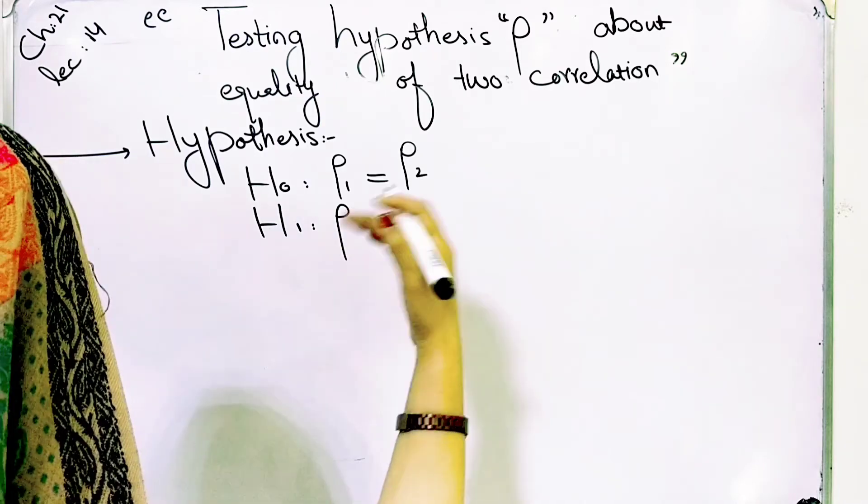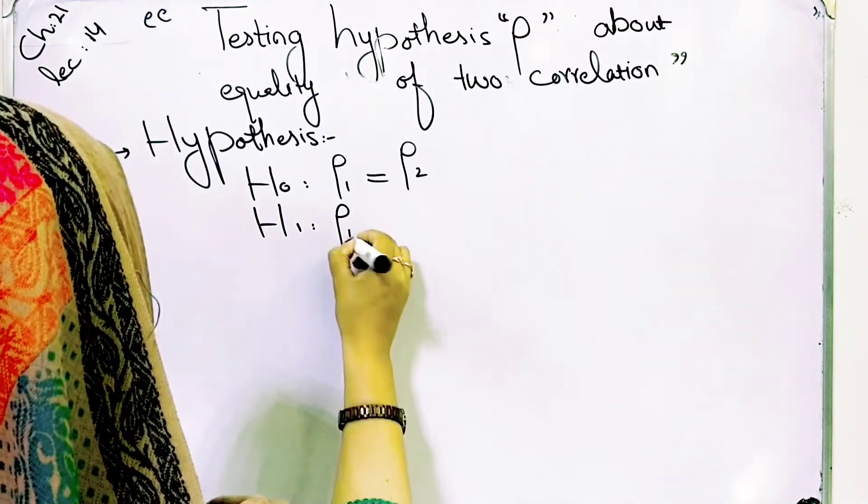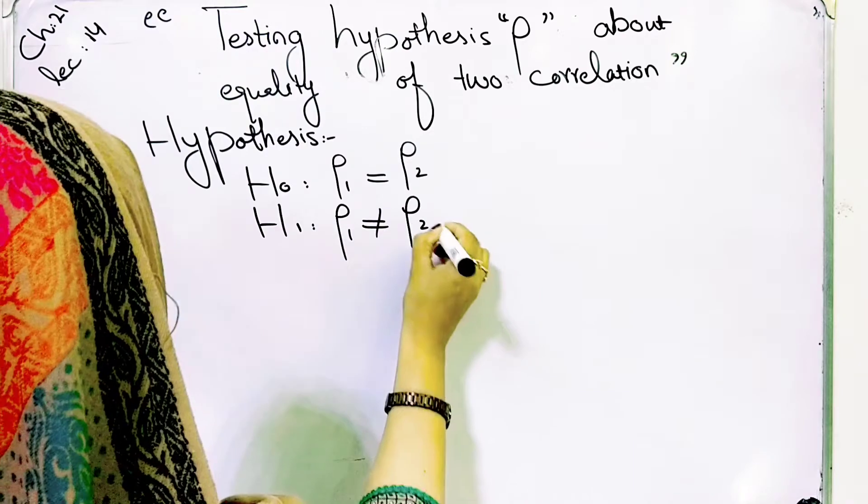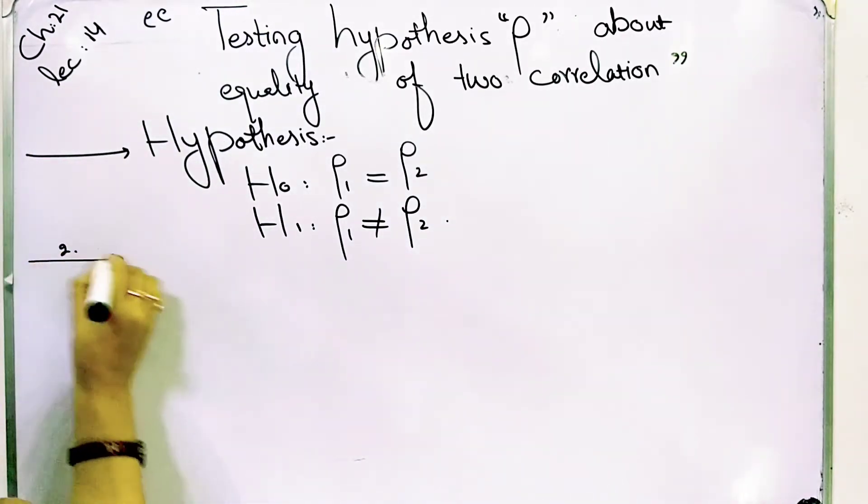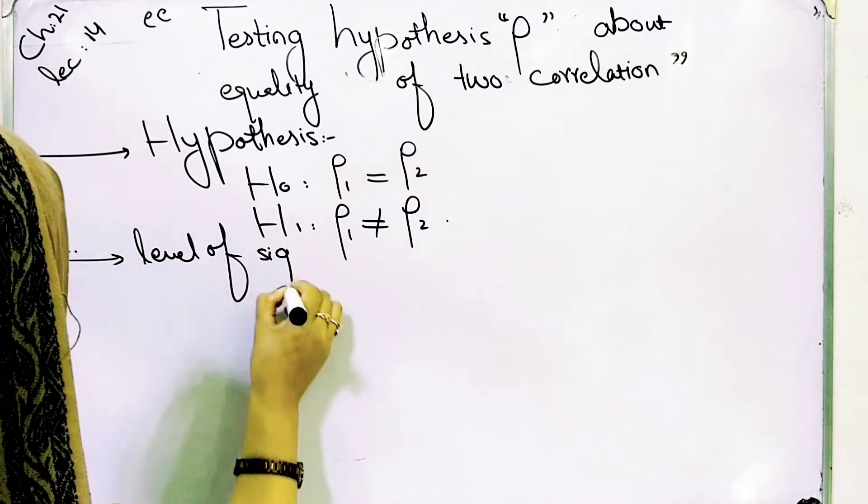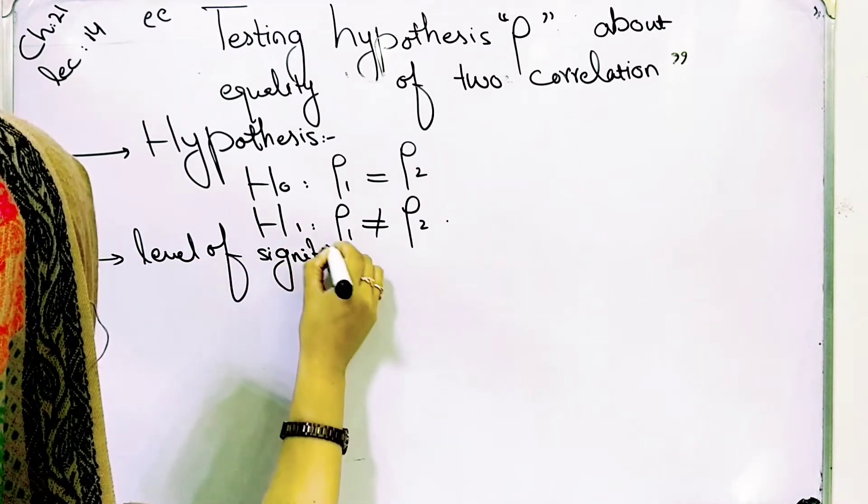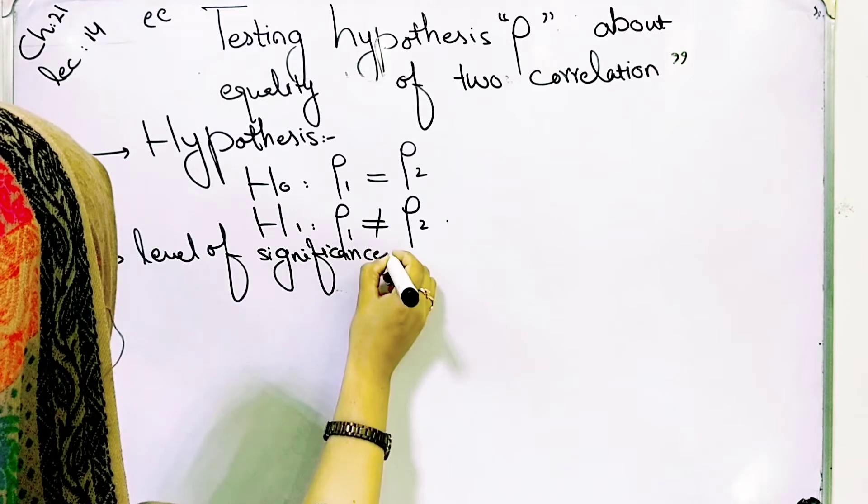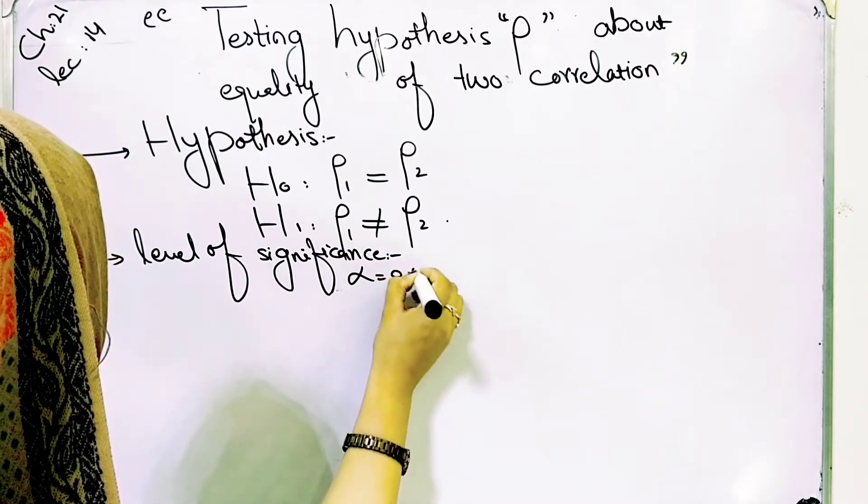The second situation, I am taking the normal situation here, is that it is not equal to this one. Then what we have to do is level of significance. If it is given, use that value. If not given, then it is 0.05.